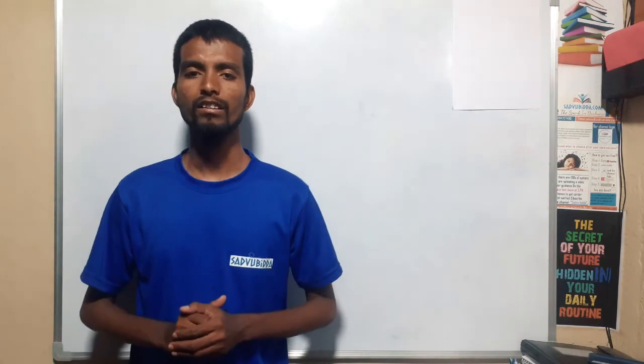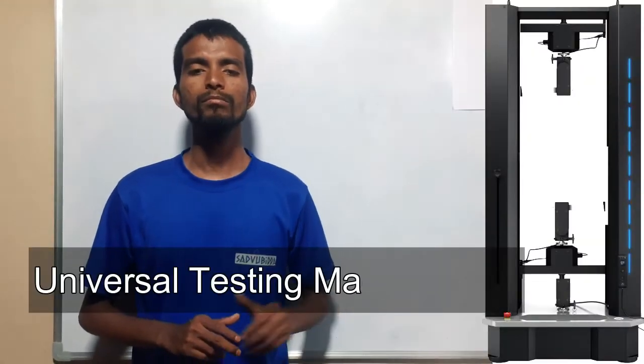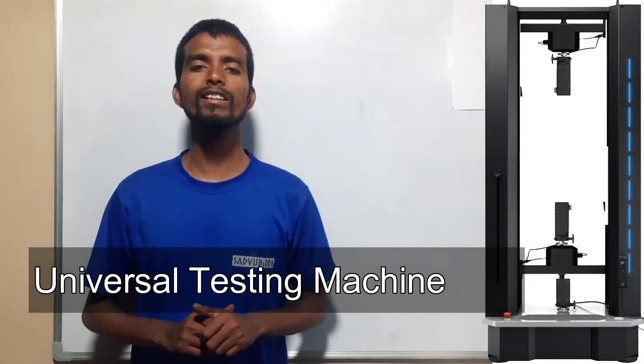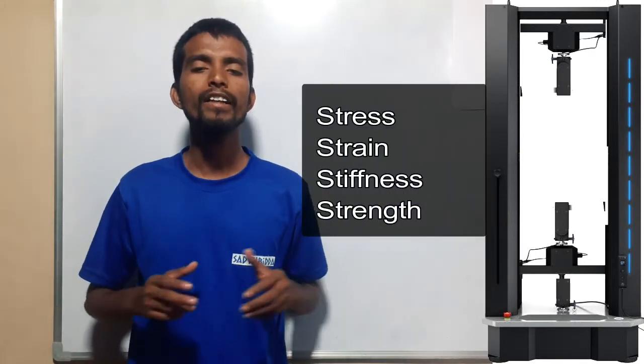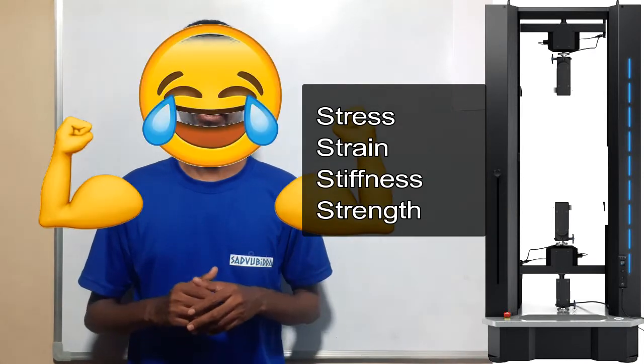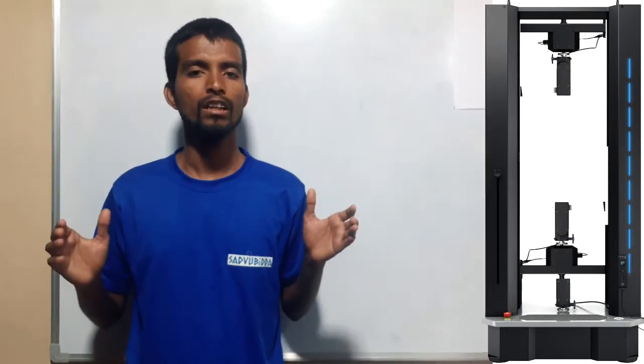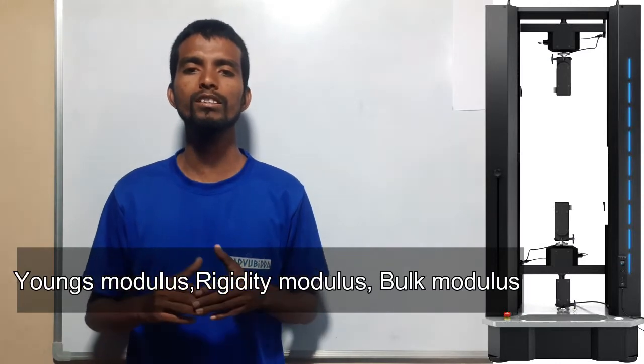For easy understanding, let us consider a UTM machine. UTM stands for Universal Testing Machine, by which you can calculate different properties of materials like stress, strain, stiffness, strength, and several other properties like Young's modulus, bulk modulus, and rigidity modulus.